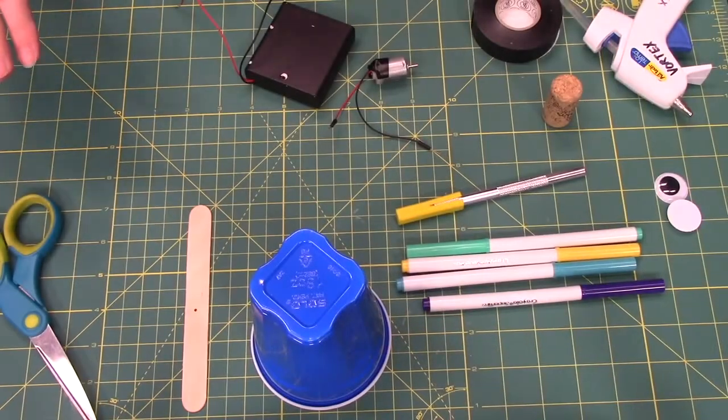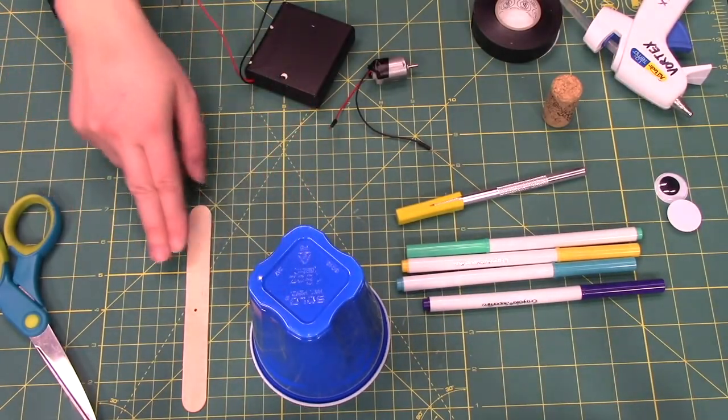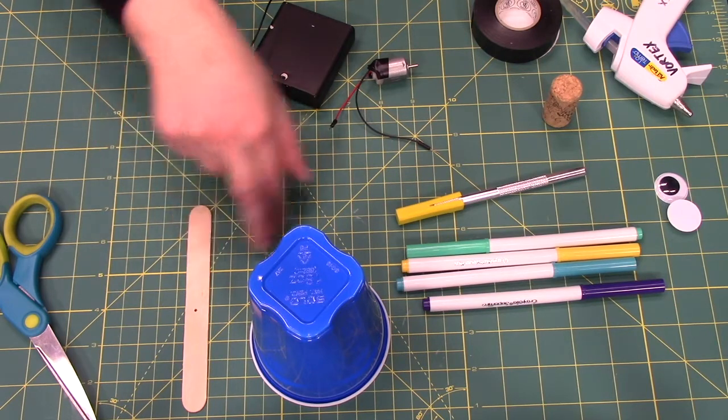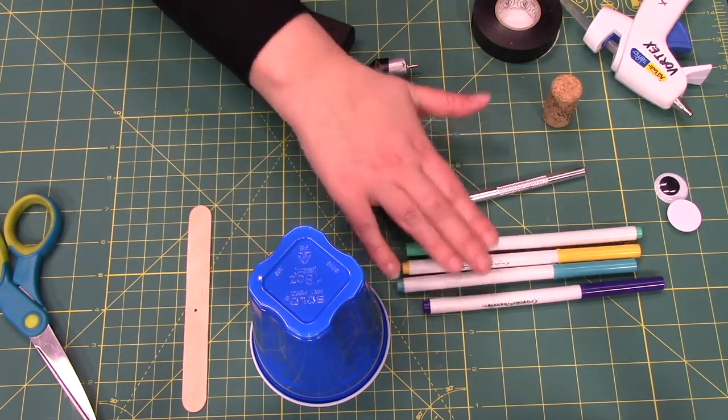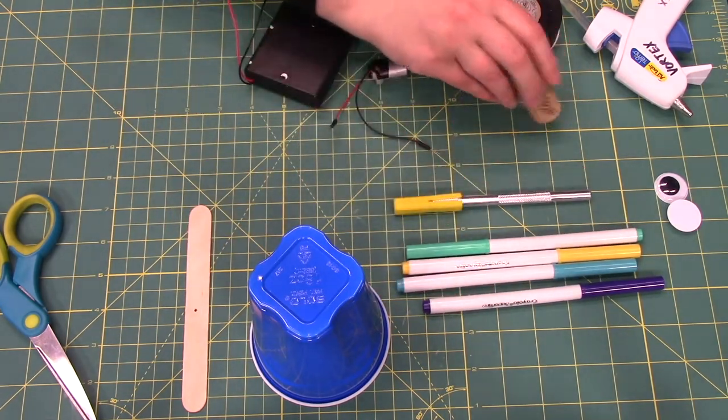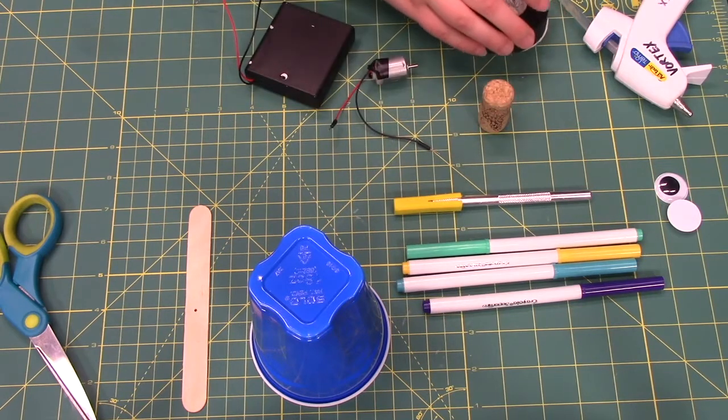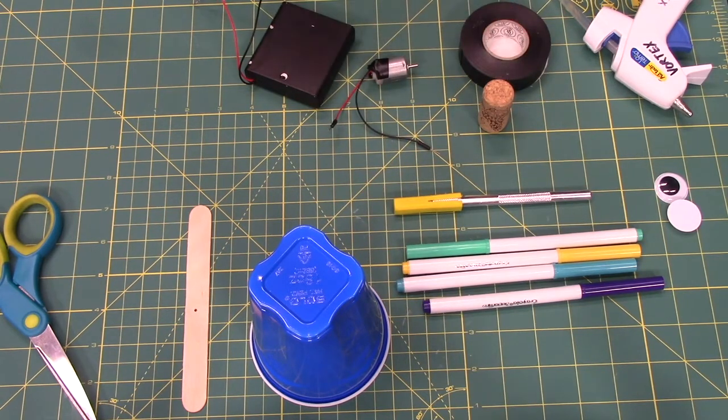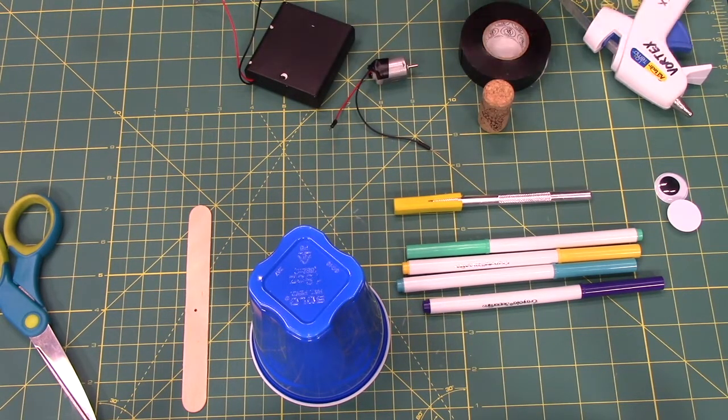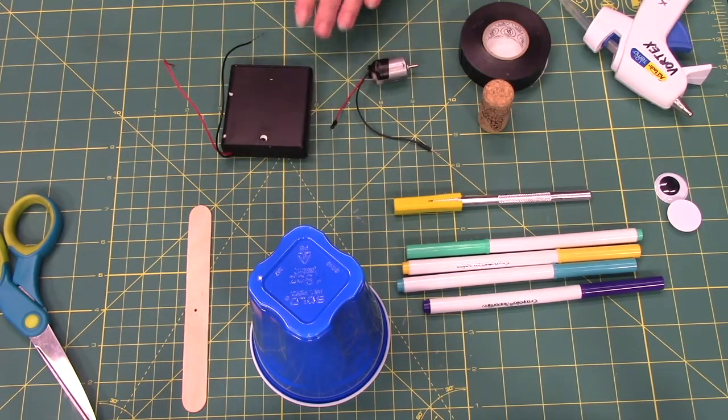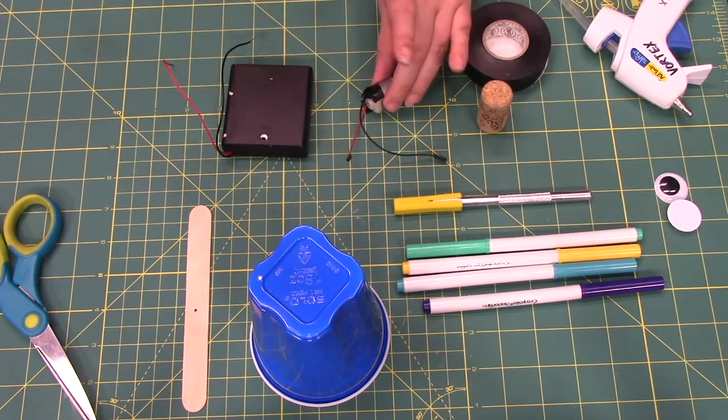To make the advanced art bot you need a cup, a popsicle stick, four markers, an X-Acto knife, a cork, electrical tape, a hot glue gun, a battery pack which is running about four volts, and a DC motor.